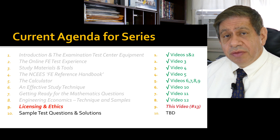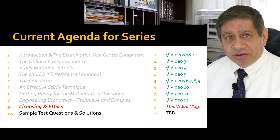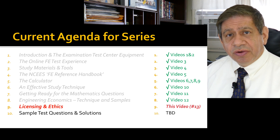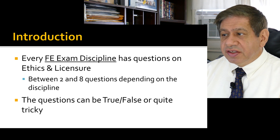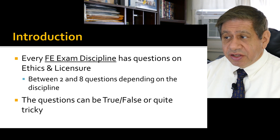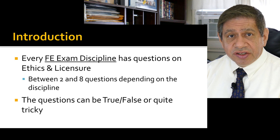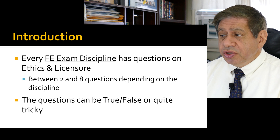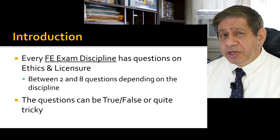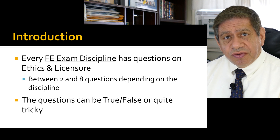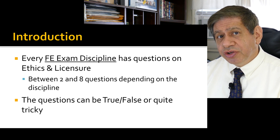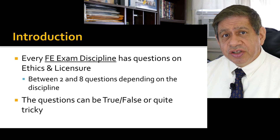That may actually be two videos because I'll probably want a second video with the answers, results, and some motivation going forward. Every FE exam has questions related to ethics and licensure — professional practice, how to get your license and retain it. There are between two and eight questions on the test depending on which discipline you choose. They usually make it so that two answers are more true and two are more false, and you have to distinguish between them.